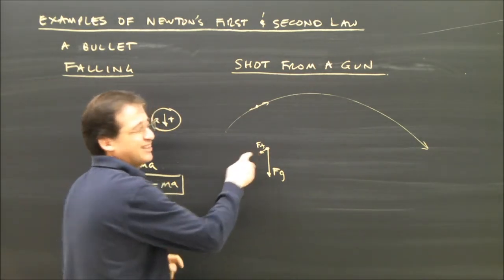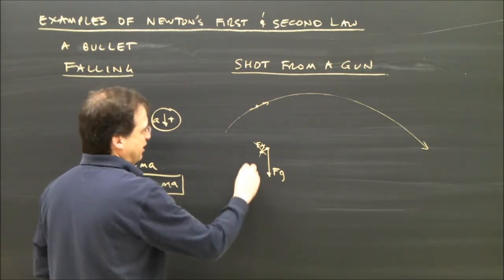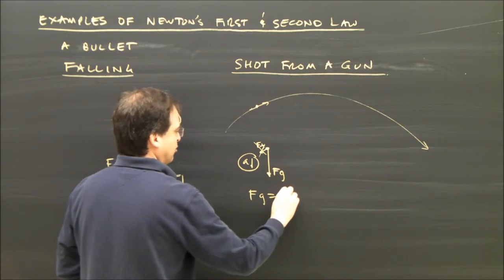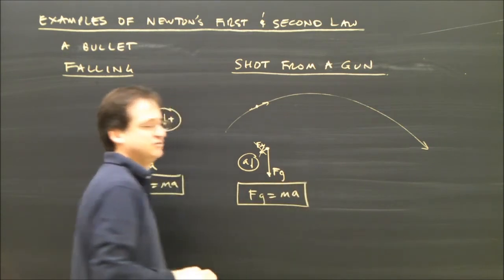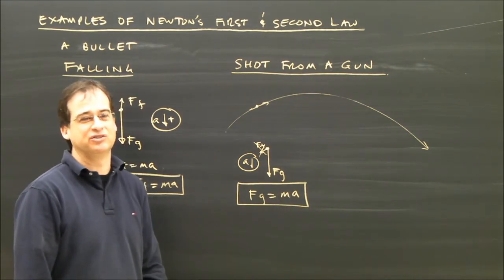So the equation that governs this, let's ignore friction because it's very slight at this point. And we'll say it is accelerating down, so Fg equals Ma. And I can figure out the acceleration. And you know the acceleration is going to be the acceleration due to gravity.